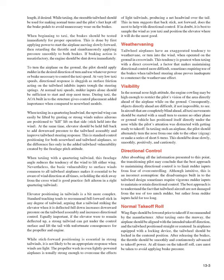Elevator positioning in tailwinds is more complex. Standard teaching recommends full forward stick in any tailwind, arguing that a tailwind striking a downward-deflected elevator increases pressure on the tailwheel and directional control. If the elevator remains deflected up, a strong tailwind can lift the tail with damaging consequences for the propeller and engine. However, in light tailwinds, propeller wash is usually strong enough to produce a net headwind over the tail, suggesting back stick does more to help directional control. When in doubt, sample the wind and position the elevator where it does the most good.